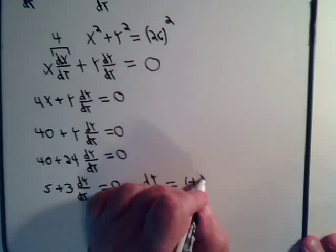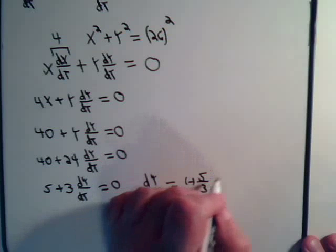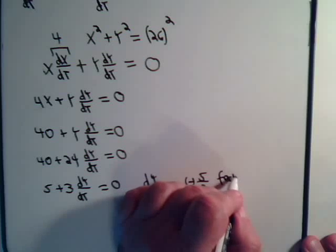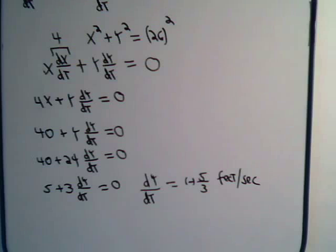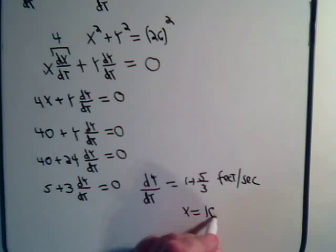So it looks like dy/dt equals negative 5 thirds when x equals 10 feet.